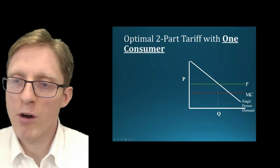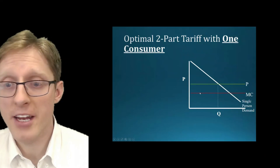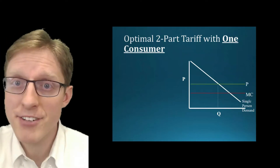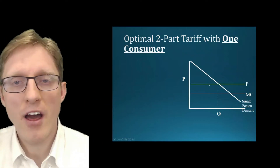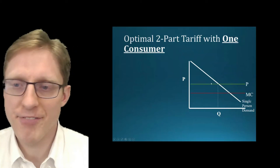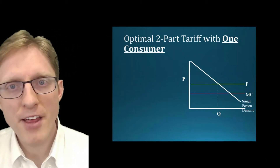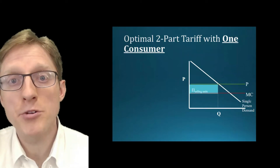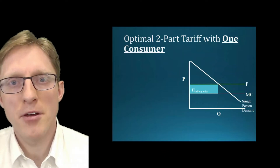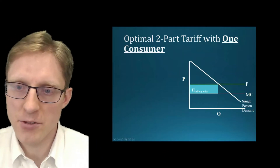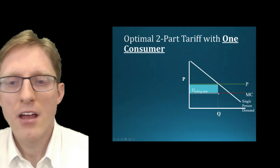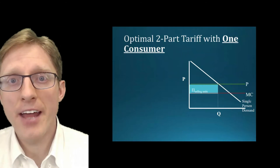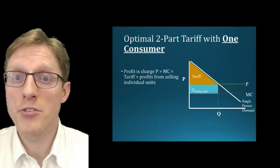We also have a marginal cost line on this graph — the marginal cost is equal to the height of the red line. For now, let's assume that the per unit price is equal to the height of this green line, and let's start by assuming there isn't a fixed fee. The profits the firm gets from selling individual units is equal to this light blue shaded area — the number of units sold times the profit per unit, which is the height difference between the price line and the marginal cost line.